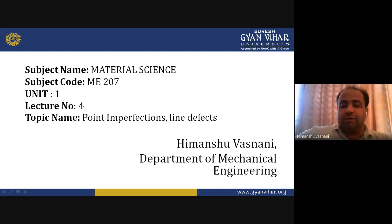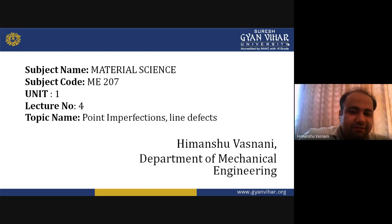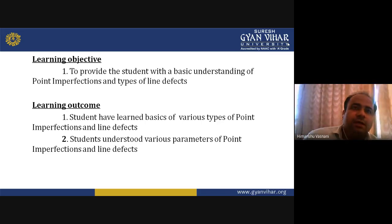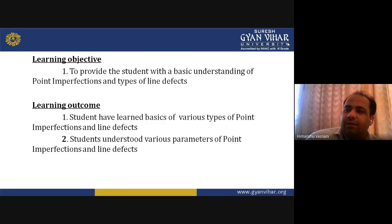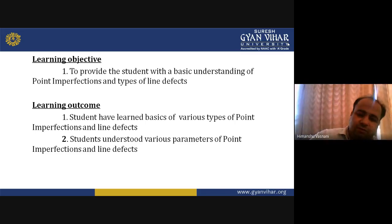Hello everyone, I am Himanshu Vasnani, here to deliver a lecture on Material Science, subject code ME207, Unit 1, Lecture 4. The topic is point imperfections and line defects. Today's objective is to make students understand point imperfections and types of line defects found in materials. The outcome will be that students have learned the basics of various types of point imperfections and line defects and their parameters.